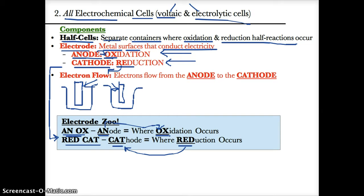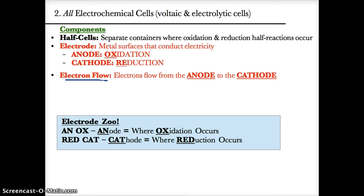What's also important to know about electrochemical cells is how electrons flow. In electrochemical cells, electrons always flow from the anode to the cathode. Let's break this down in terms of redox reactions and electrons.